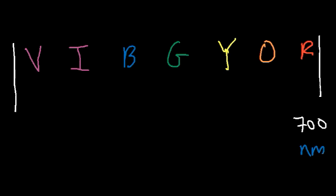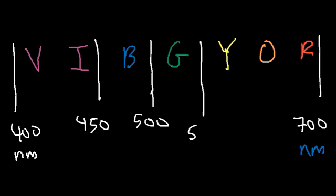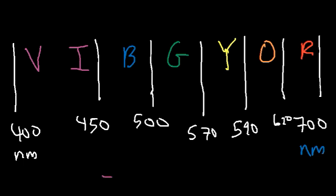At the edge of violet it's 400 nanometers; between violet and indigo it's about 400 to 450. Blue light ranges from 450 to about 500 nanometers. Green light ranges from 500 to about 570. Yellow is a very small range — 570 to 590. Orange goes from 590 to 620, and red is from 620 to 700 nanometers. For example, a wavelength of 530 nanometers falls between 500 and 570, so that would be a green photon.